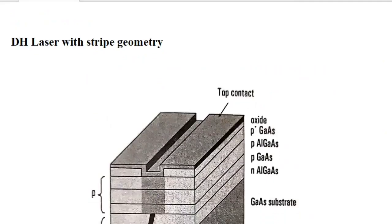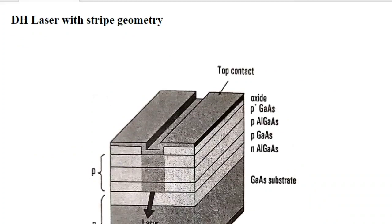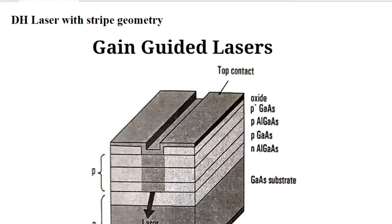There is one problem in double heterostructure lasers: there is spreading of light across the entire width of the laser at the active region. We are not controlling the direction of light — it spreads and is not pointed precisely. In order to avoid this problem, we can use gain-guided lasers.